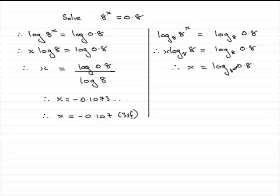And if you use your calculator to do this particular method then you should find that you get exactly the same answers you got over here. x equals minus 0.1073 and so on.